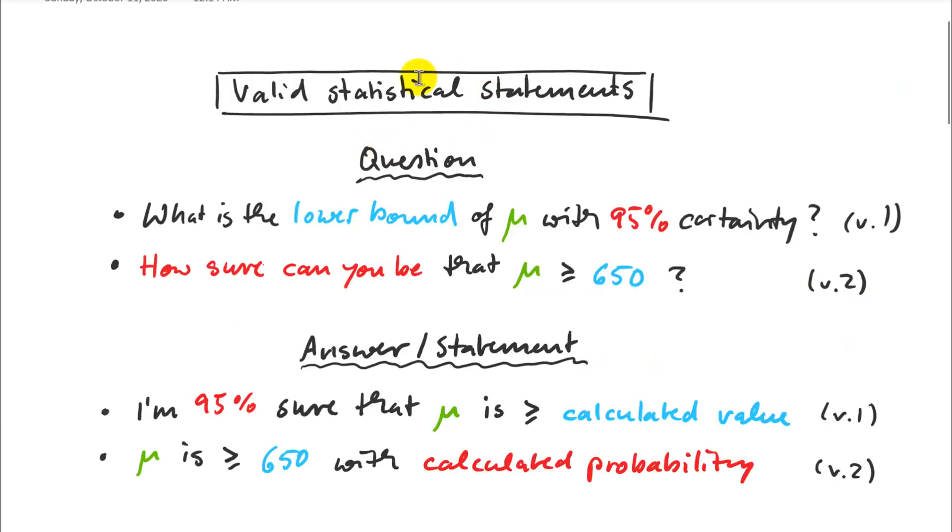So let's start with a review of those statistical statements that we could make based on the one-sided t-test. And we had two versions of this. One was, what's the lower bound of some unknown population parameter with 95% certainty? This was our confidence interval idea. If we determine a lower bound and an upper bound where the true population mean sits with 95% certainty, then we have a confidence interval. And the answer would be 95% sure that mu is larger than some calculated value.